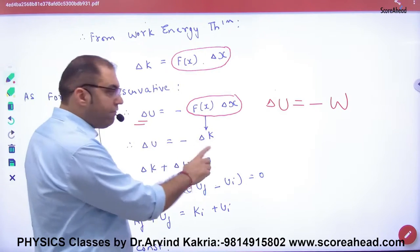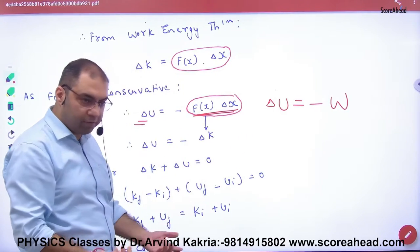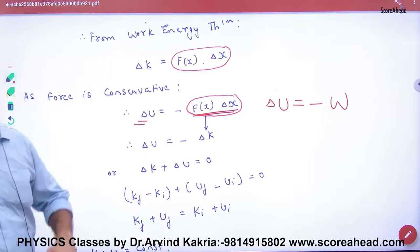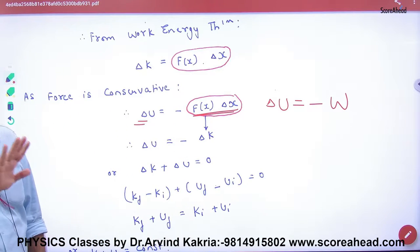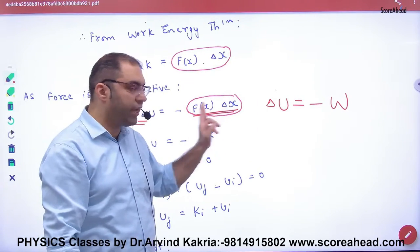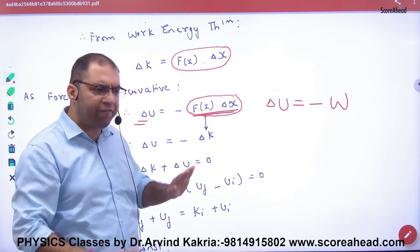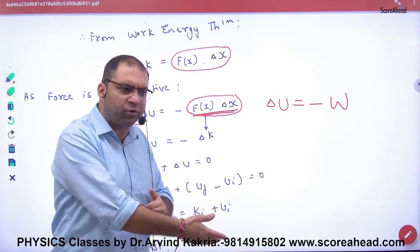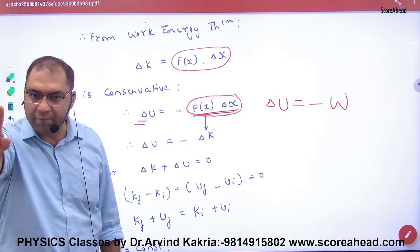Work done क्या होता है — force into displacement। Work done की जगह F into delta x put करो। F is a function of x — put कर दो, एक ही बात है। यह step clear है?